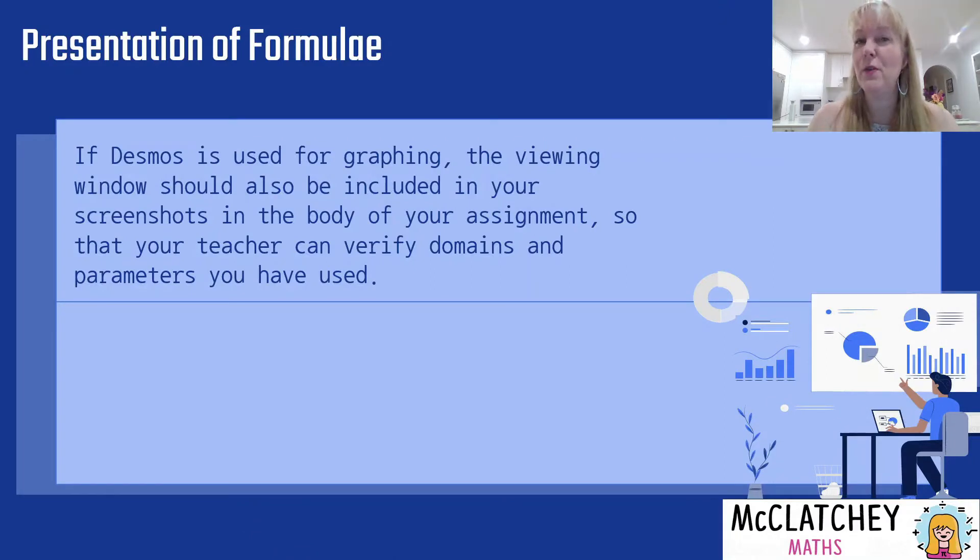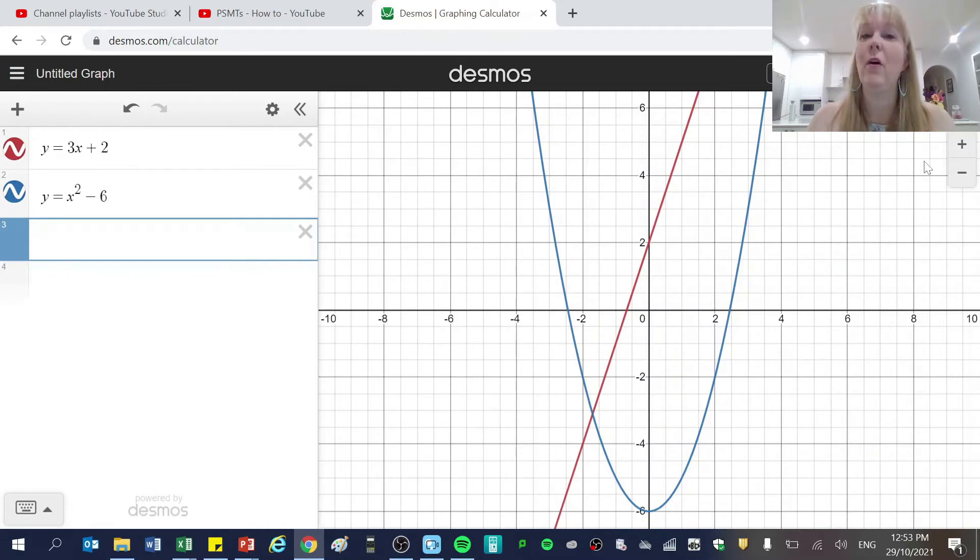If I use Desmos to do some graphing it's really important that I show in my assignment in the body how I developed my graph and the way that I do that is to take a snapshot of the viewing window. Here I am in Desmos, I've created a couple of graphs, one of a straight line and one of a parabola. Now the viewing window is actually this section over here. Sometimes when we do more fancy stuff in Desmos there's a lot more information that's shown here, things like domains and variables. It's really important I take a snapshot of this section in addition to the graph and import that into the body of my assignment as well.